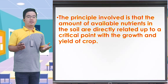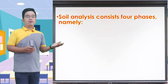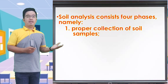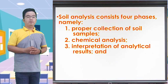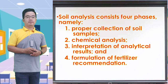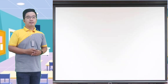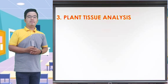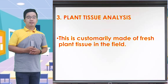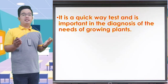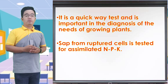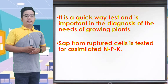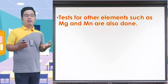Soil analysis consists of four phases: proper collection of soil samples, chemical analysis, interpretation of analytical results, and formulation of fertilizer recommendations. Plant tissue analysis is customarily made of fresh plant tissue in the field. It is a quick and easy test, important in the diagnosis of the needs of growing plants. Sap from ruptured cells is tested for nitrogen, phosphorus, and potassium. Tests for other elements such as magnesium and manganese are also done.